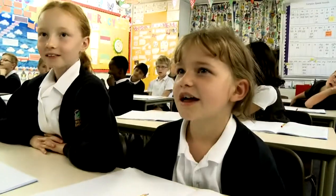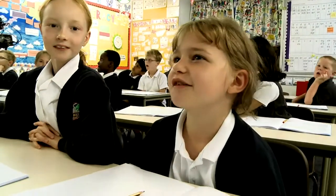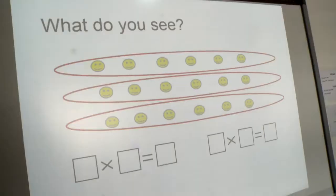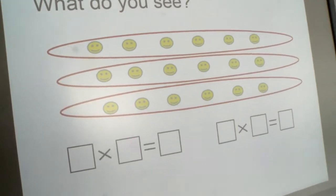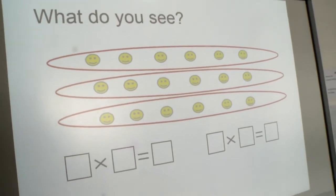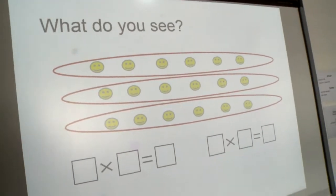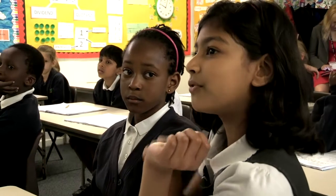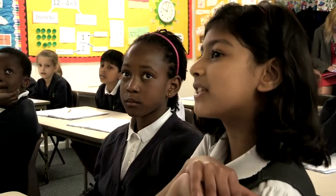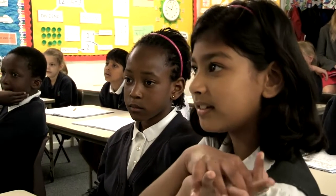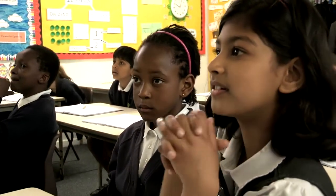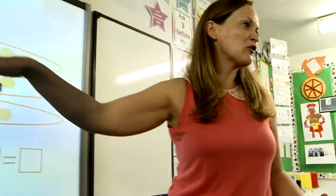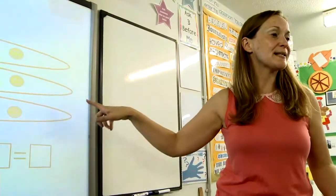What do you see on the board, Emily? Three groups of six. Good job. Kareth, tell me what you see. I see three groups of six. We developed the children's understanding of commutative law by using arrays. I asked them: what do you see?